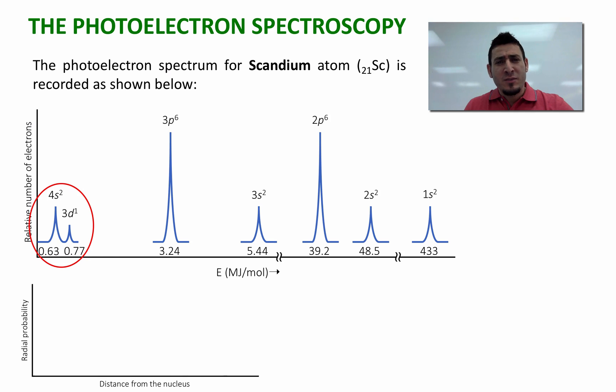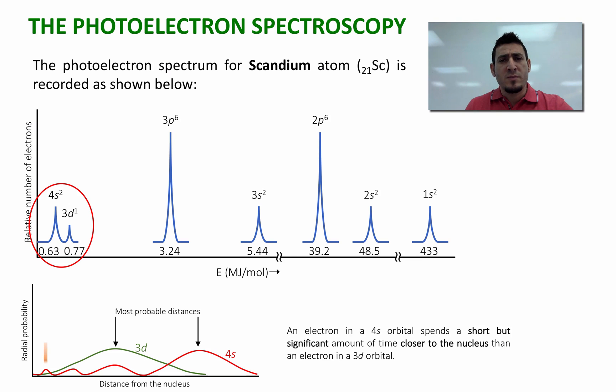If we take a look at the radial probability of these two orbitals, we can see that the 3d orbital is less energetic than the 4s orbital. So why would we fill the 4s before the 3d then? Because an electron in a 4s orbital spends a short but significant amount of time closer to the nucleus than an electron in a 3d orbital. However, this electron will spend most of its time farther from the nucleus. So when we come to remove this electron, there is a higher probability of finding it farther from the nucleus than closer to the nucleus. And that's why we remove this electron first.